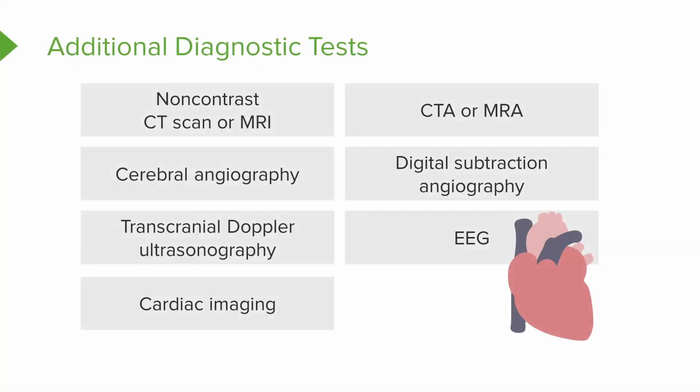So there you have seven possible additional diagnostic tests that might be ordered for a patient having a neurology problem. I would recommend pausing the video and going back — there may be details you want to revisit, so listen to this section again to get a feel for what these tests are, then join back up with us.